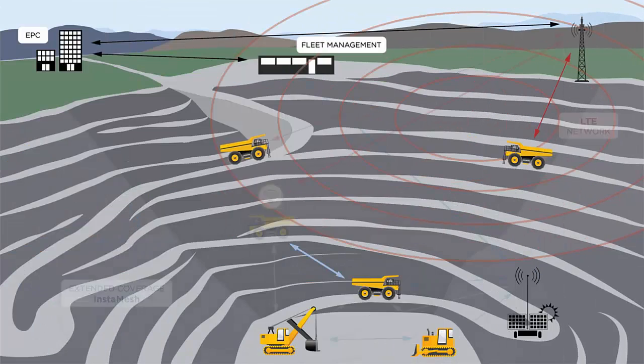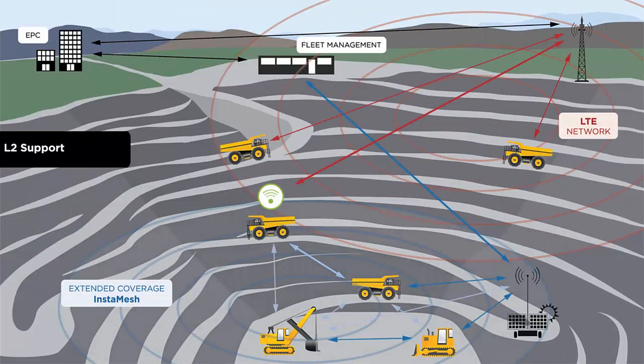Here's a third scenario that shows how our hybrid solution can solve a particular problem many applications have when trying to send traffic over a cellular network. That LTE network requires routing, while many applications require a simple Layer 2 network without any traffic having to traverse a router.